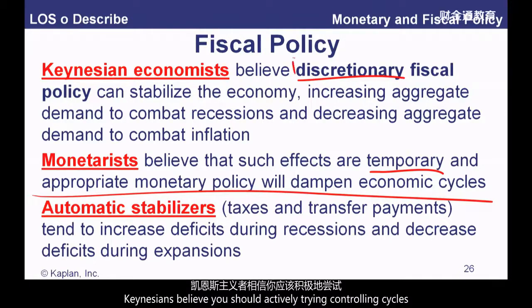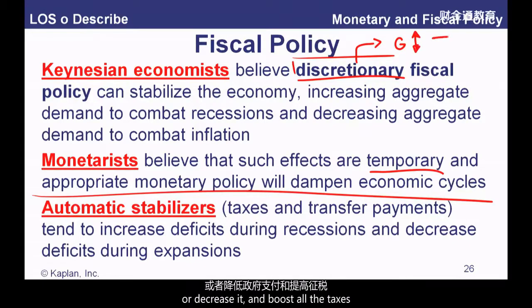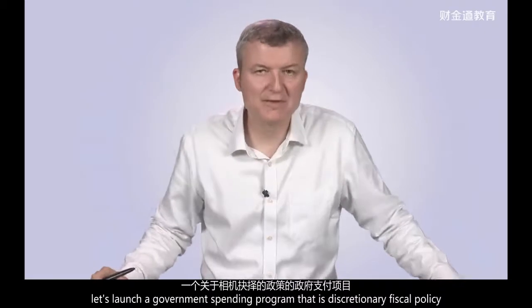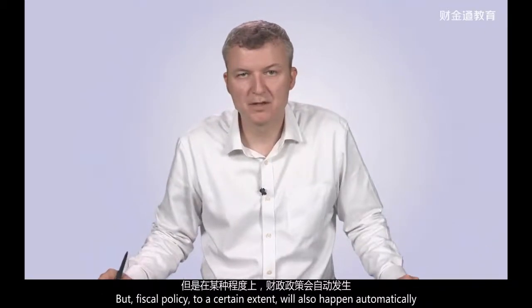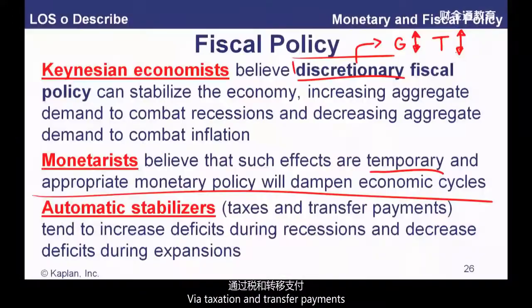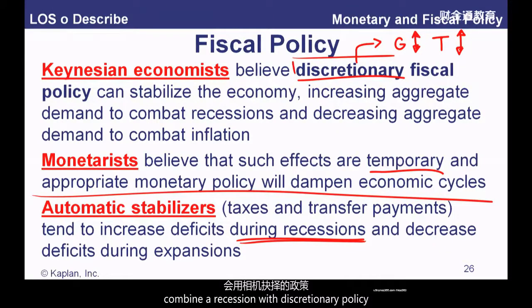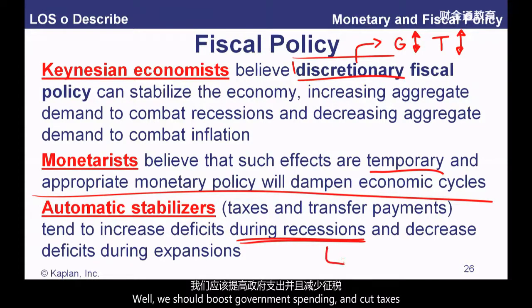Keynes believes you should actively try and control these cycles using discretionary fiscal policy — choosing to boost or decrease government spending, and to boost or decrease taxes. So if you actively decide to launch a government spending program, that is discretionary fiscal policy. But fiscal policy will also happen automatically via taxation and transfer payments. For example, let's say we are in a recession. Keynesian economists would say to combat a recession with discretionary policy, we should boost government spending and cut taxes.